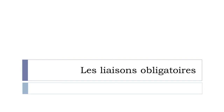Les liaisons obligatoires. Since we started this Learn French with Vincent videos, I've been talking quite much about les liaisons — these little links that you can put between words. There are rules for these things, and I've been receiving messages regarding this topic. This video will focus only on les liaisons obligatoires, the ones you should make. After that we'll see the ones you shouldn't make, and then the optional ones.